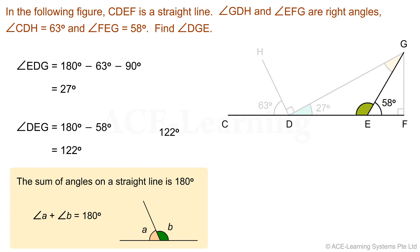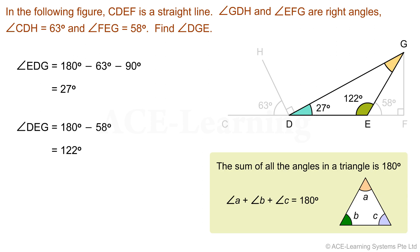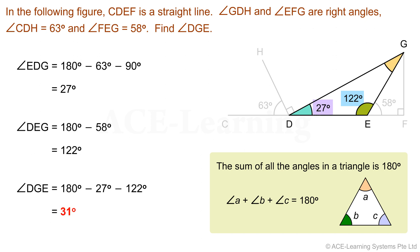Let's indicate the angle measurement of angle DEG in the diagram. Now that we have found the angle measurements of angles EDG and DEG, we can find angle DGE. Based on the property that the sum of all angles in a triangle is 180 degrees, angle DGE equals 180 degrees minus 27 degrees minus 122 degrees, which equals 31 degrees.